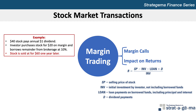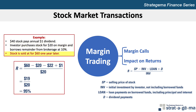Consider a stock priced at $40 that pays an annual dividend of $1 per share. An investor purchases the stock on margin, paying $20 per share and borrowing the remainder from the brokerage firm at 10% annual interest. If after one year the stock is sold at $60 per share, the return on the stock is 95%. Of course, losses are magnified when borrowed funds are used to invest in stocks.